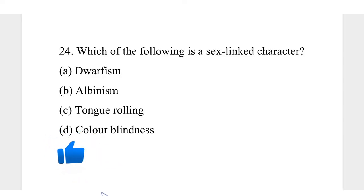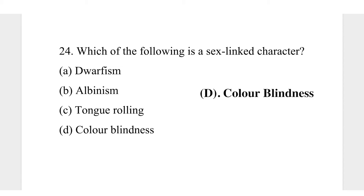Question 24. Which of the following is a sex-linked character? A, dwarfism; B, albinism; C, tongue rolling; D, color-blindness. An example of a sex-linked character would be color-blindness, night-blindness, and hemophilia — that is when you hemorrhage and have difficulty in your blood to clot. Albinism, dwarfism, and tongue rolling are not examples of sex-linked characters. So the correct answer is D, color-blindness.